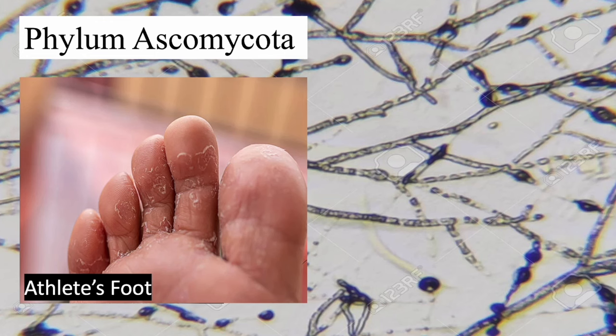Some species within this phylum, like dermatophytes, are pathogenic — like the one that causes athlete's foot. These fungi thrive in warm, moist environments like the inside of sweaty shoes, which is why it's called athlete's foot. Symptoms can include itching, stinging, and burning sensations between the toes or on the soles of the feet, peeling or cracking skin, blisters, and dryness on the sides of the feet. Athlete's foot is usually treated with antifungal medications, which can be topical — applied to the skin — or taken orally by mouth, depending on the severity of the infection.